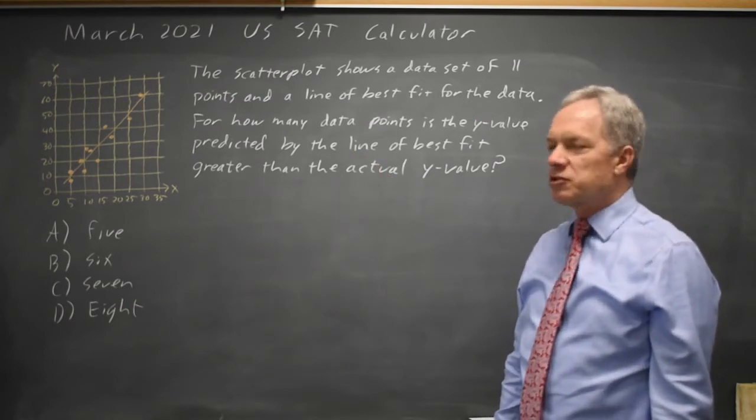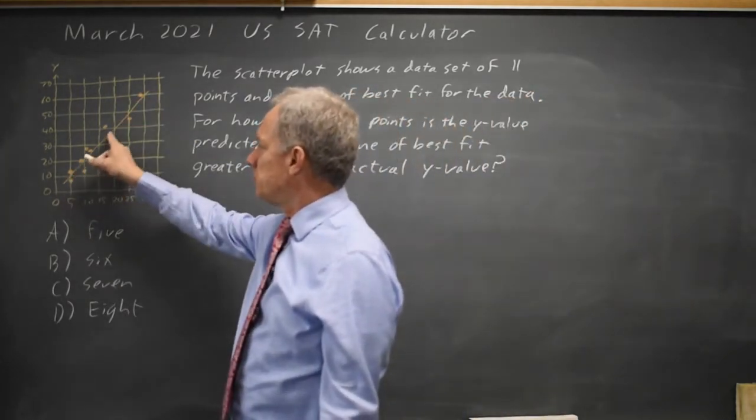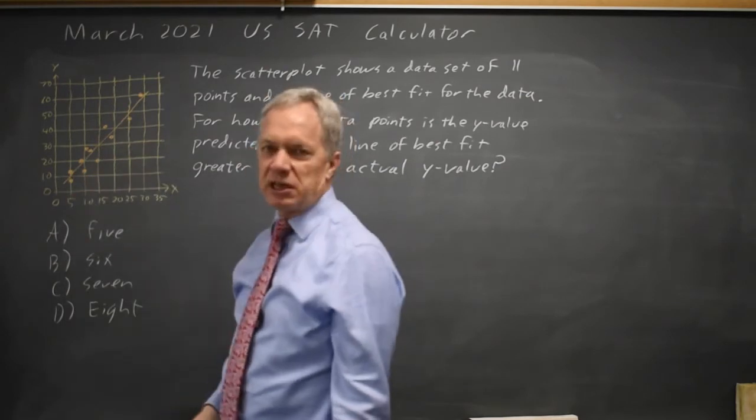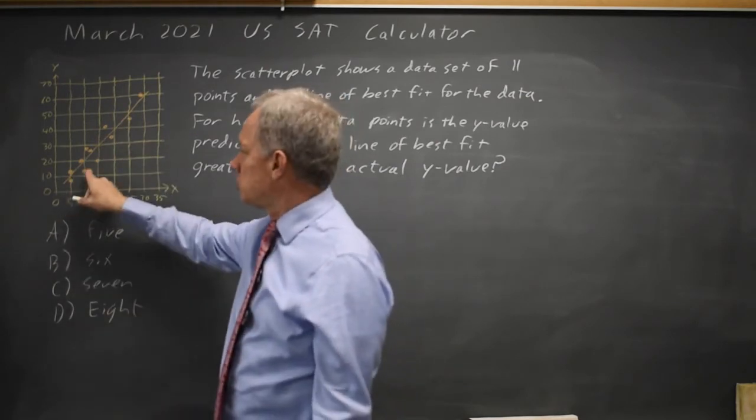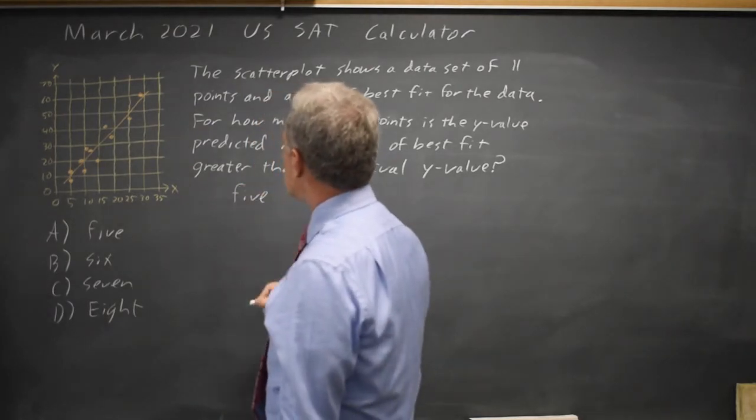If predicted is greater than actual, then the line of best fit, which is predicted, will be above the point plotted, which is actual. And I see that 1, 2, 3, 4, 5 are below.